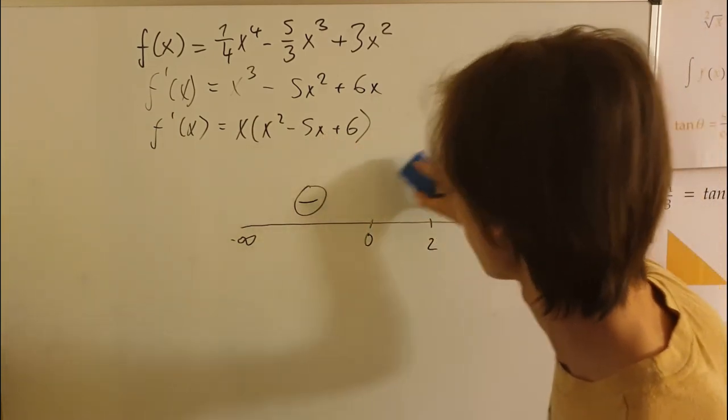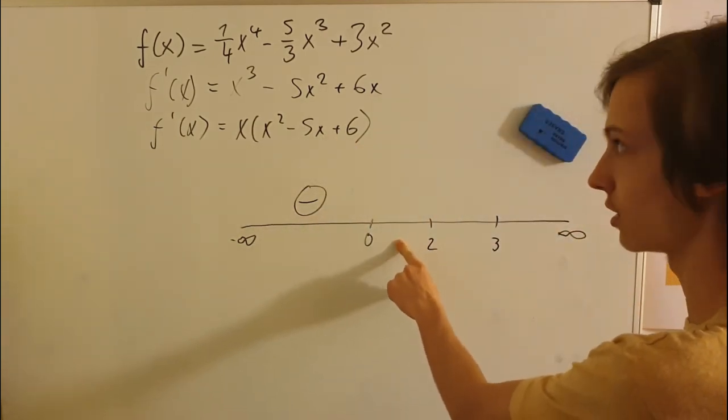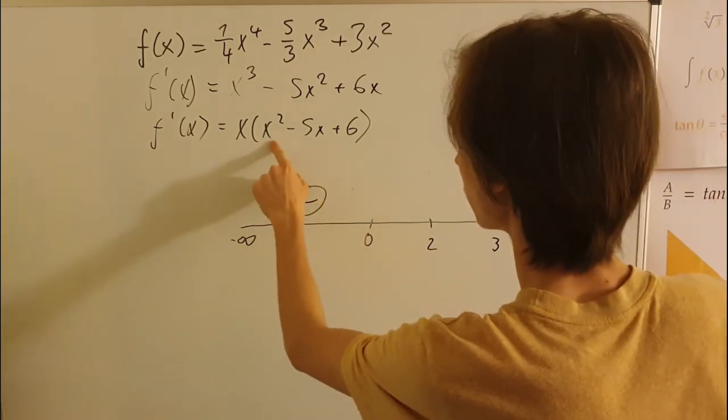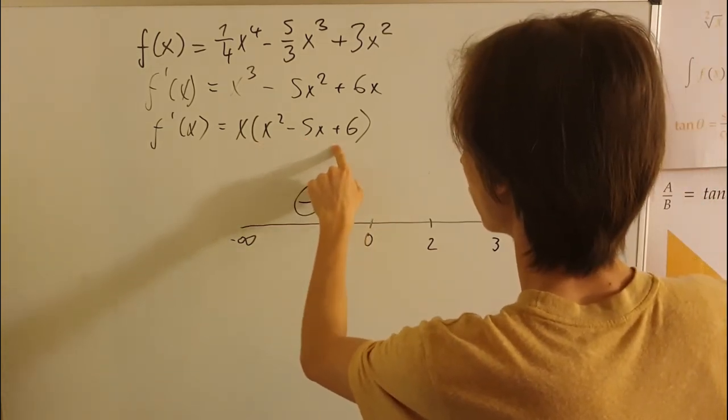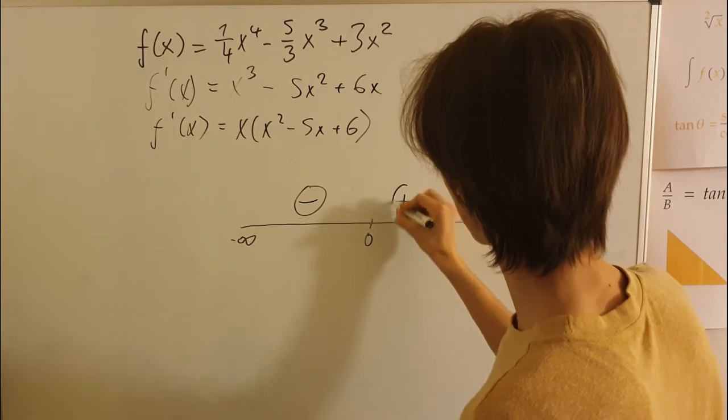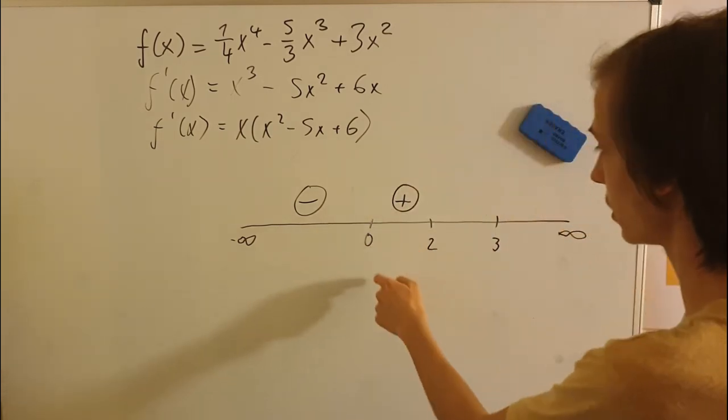So let me just say minus. Then we can plug in one for this interval, and we'll get one times... This is a positive one. So this interval, if we plug in a number between zero and two, we will get that it is positive.